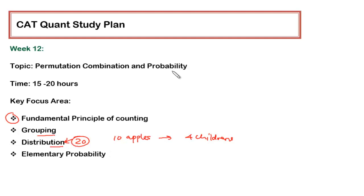Now for probability, you don't have to go into the high-end concepts on probability. Just stick yourself to the elementary level of probability wherein you should understand what is simple probability and what is compound probability. These are the only two things which you have to focus.